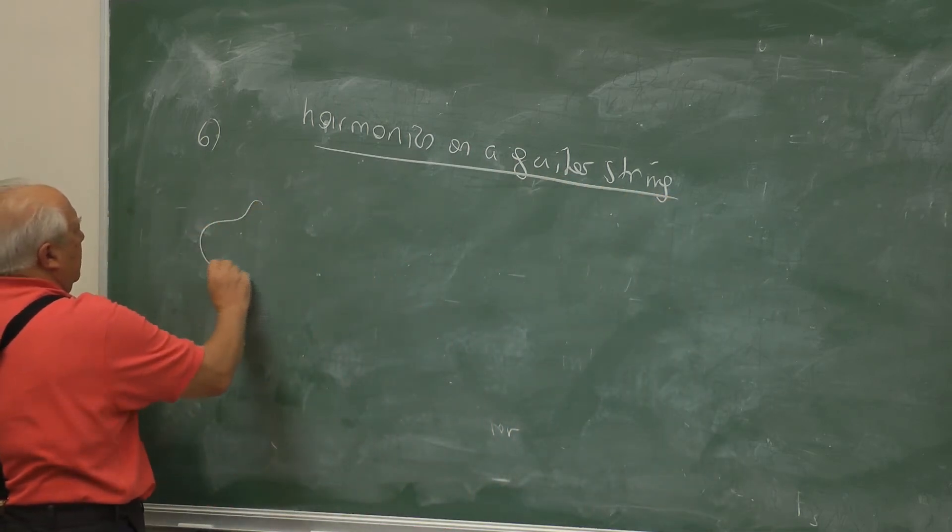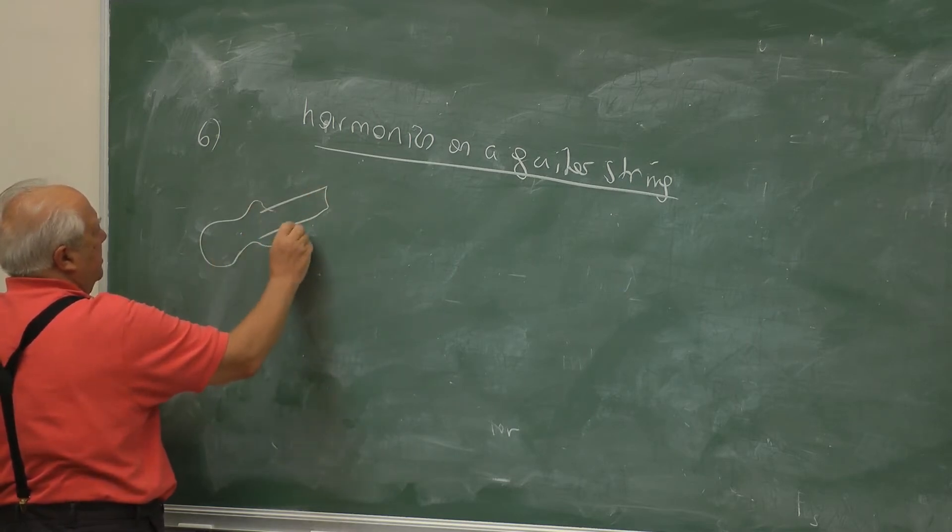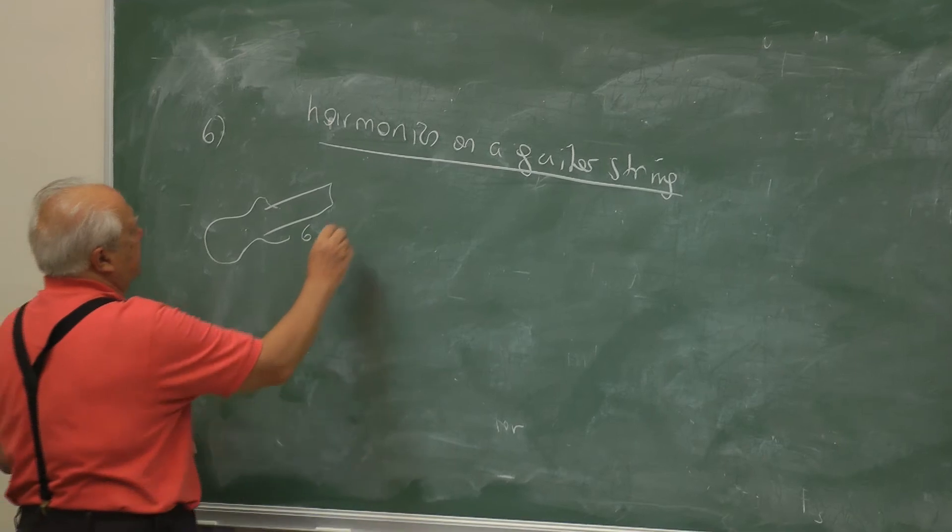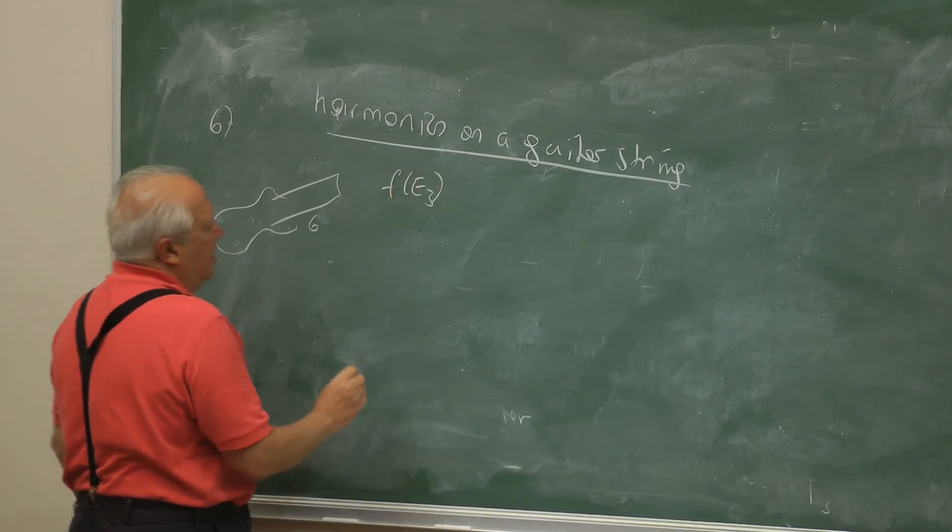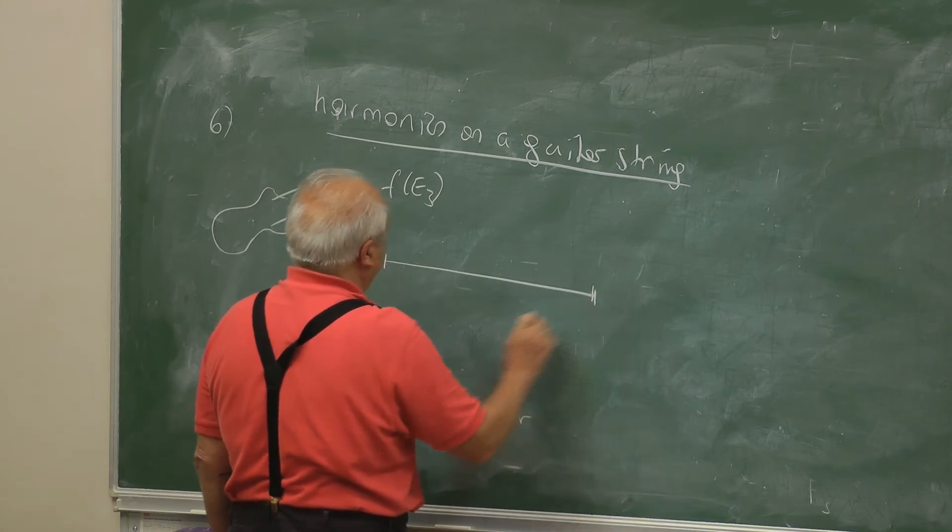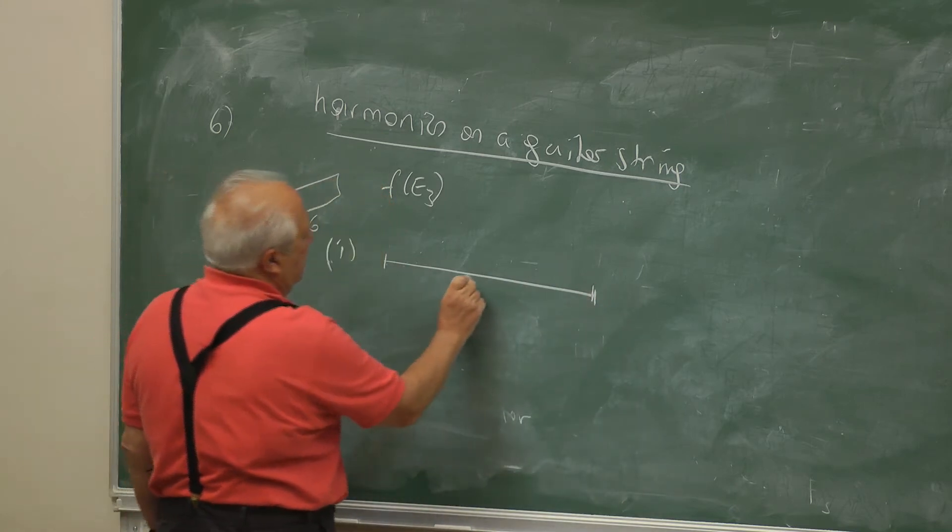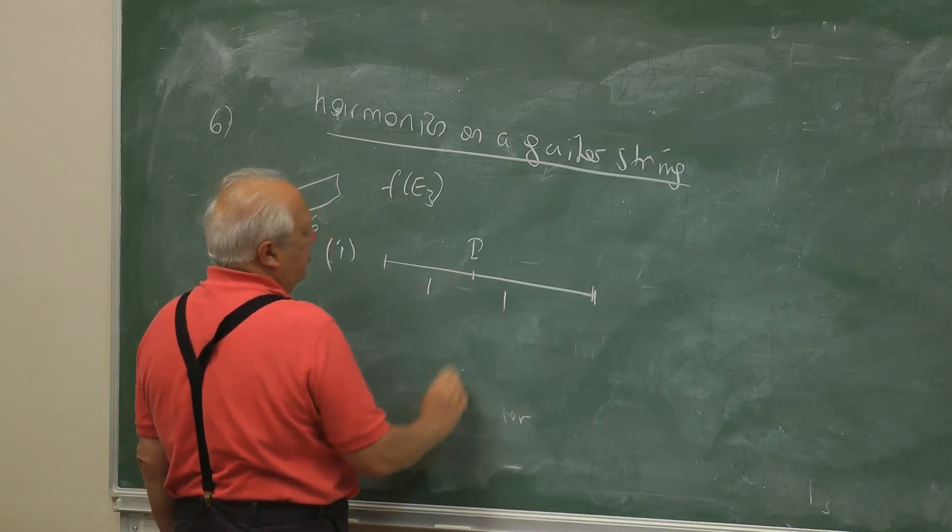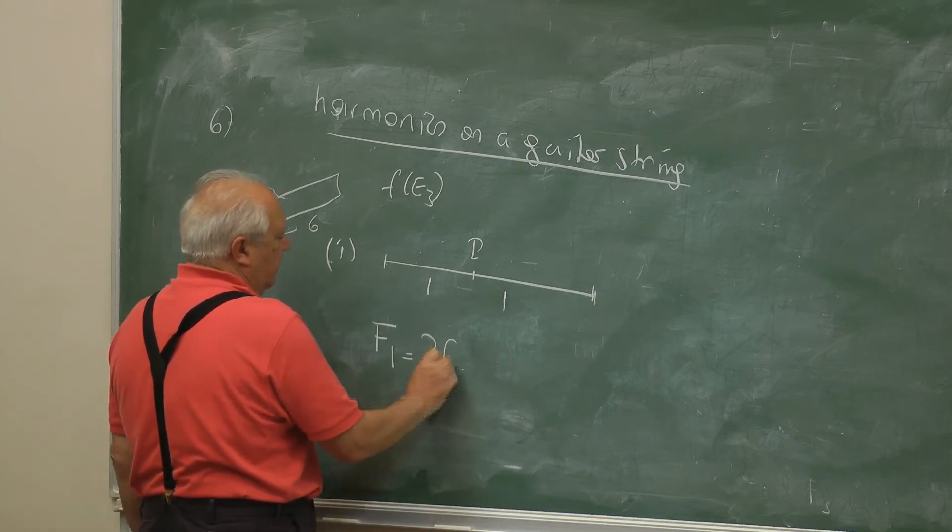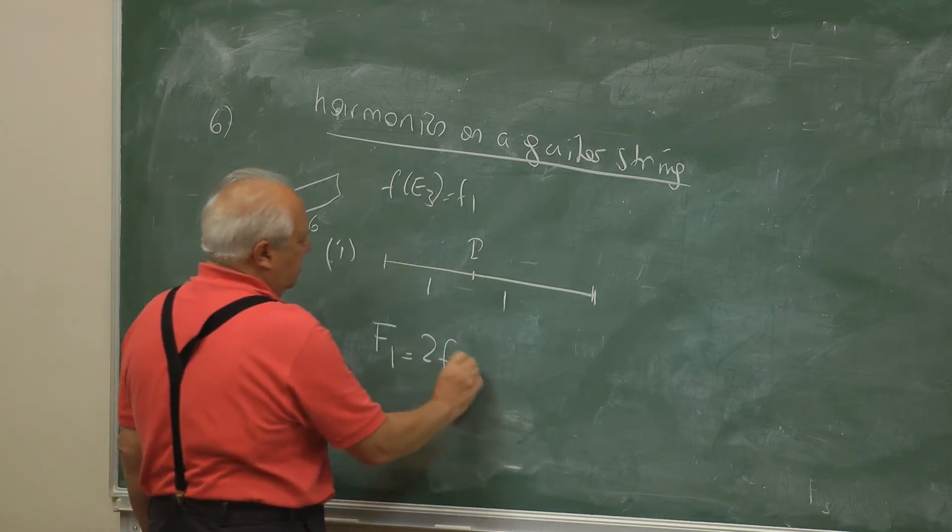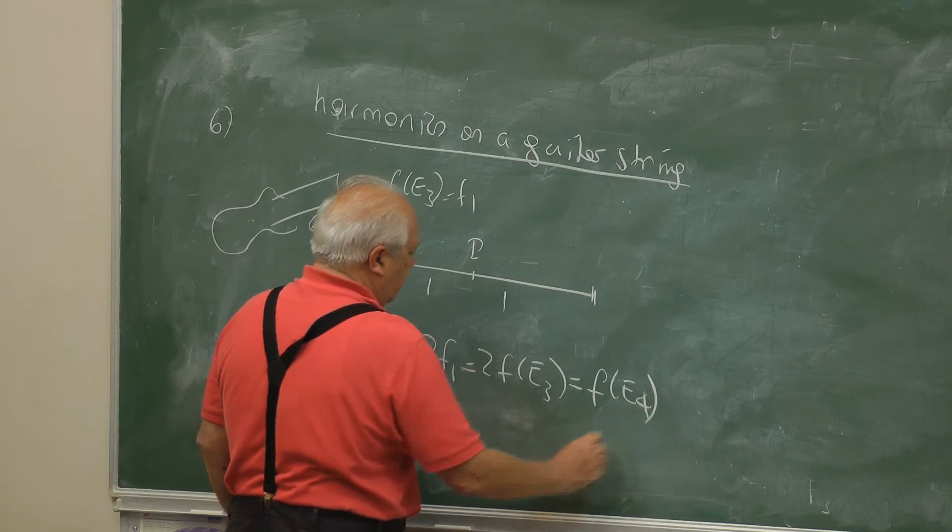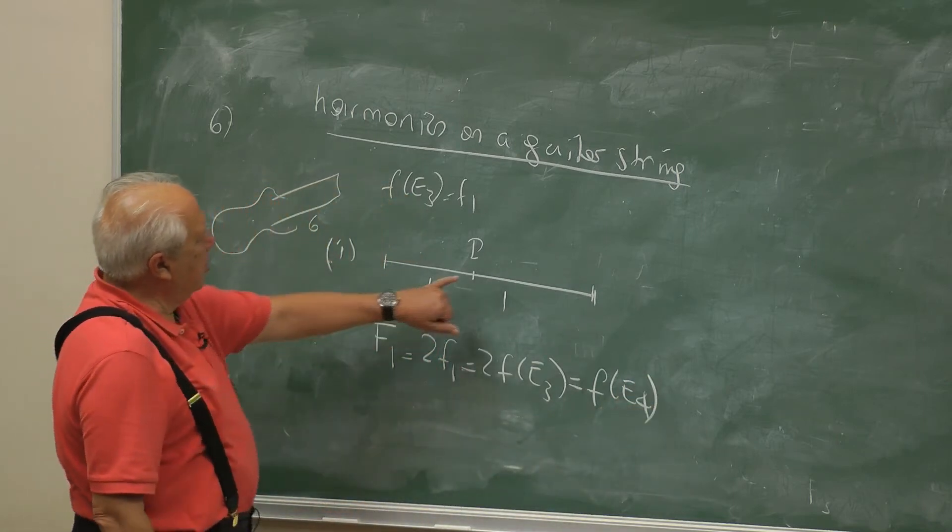So this is harmonics on the guitar string. Here is the guitar. It has six strings and the lowest pitch is Fe3. Now, let us produce harmonics. For example, we begin with the first one. P is in the middle. So this is in the ratio of 1 and 1. So the lowest frequency produced will be 2 f1. This is f1, so it is 2 f e3, which is f e4.